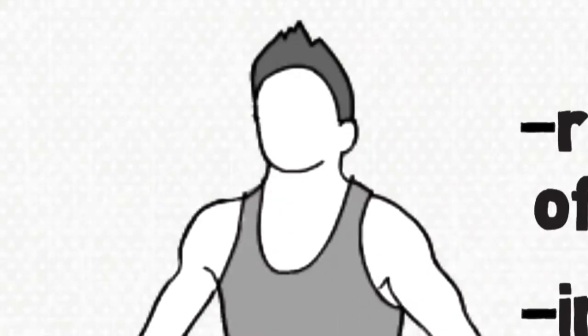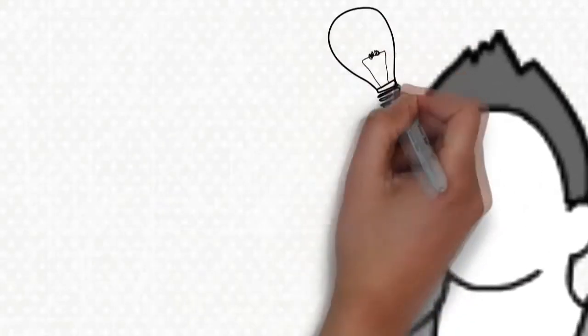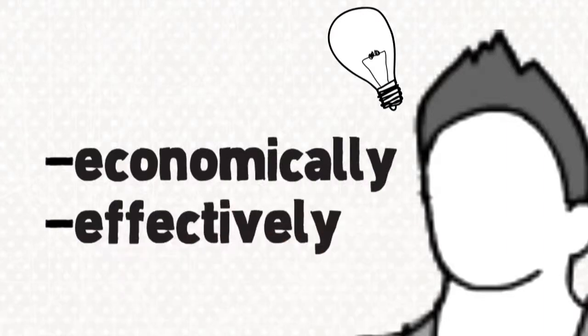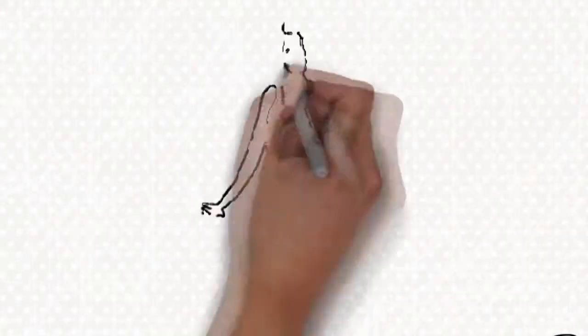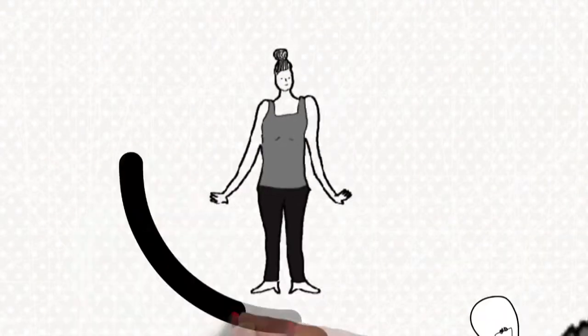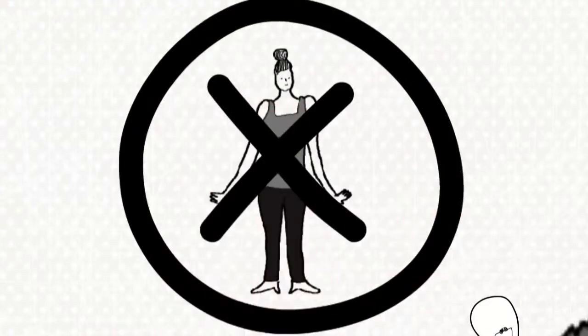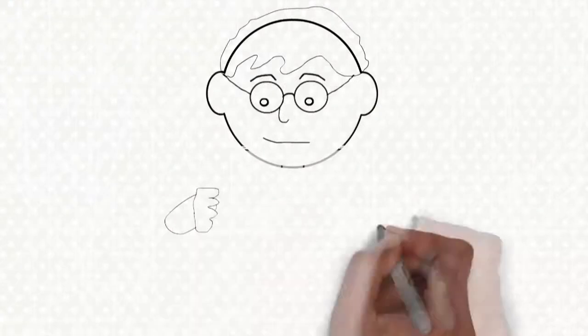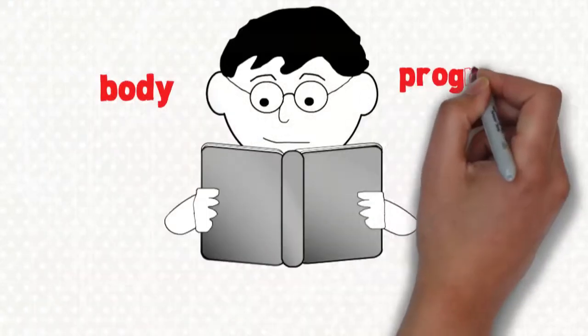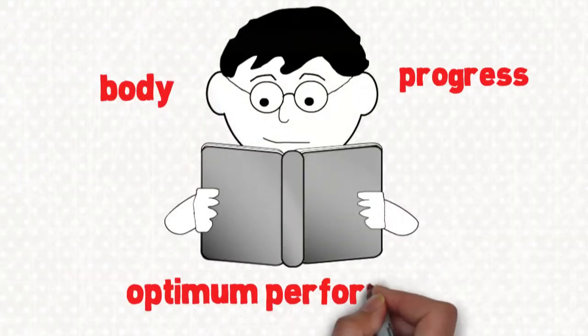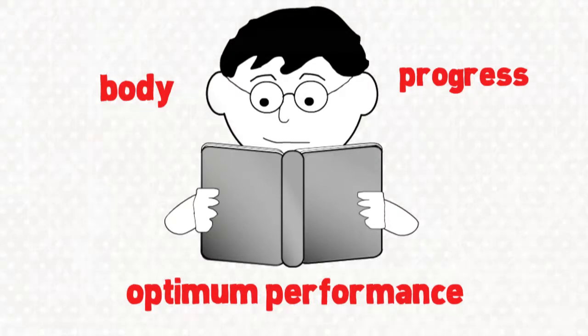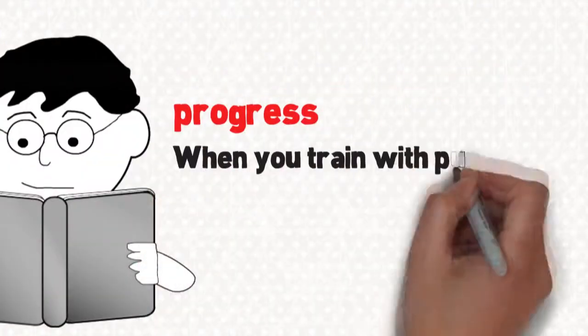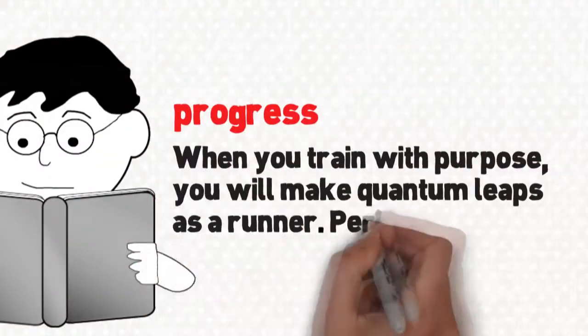Once you have dialed in your running form, it's time to learn how to train economically and effectively. Instead of giving you a one size fits nobody training plan, you will learn how to develop your training based on where you are as an athlete. Learn how to read your body, assess your progress and make the proper adjustments to your training plan for optimum performance. When you train with purpose, you will make quantum leaps as a runner, period.